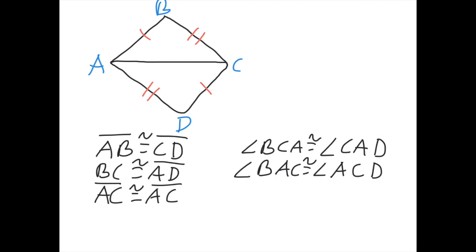You can name all three letters if you want, but you don't need to. So, angle B is congruent to the one opposite this side in the other triangle, which is angle D.